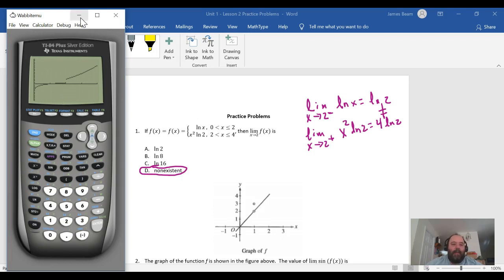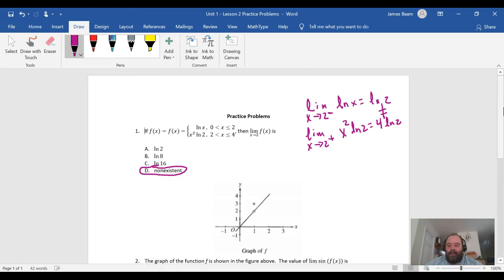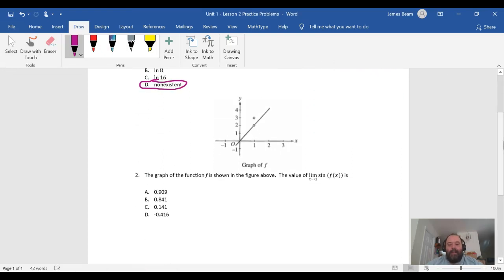Okay, all right. So this second one is also pretty instructive. It's asking here for the limit as x approaches one of the sine of f of x. The key here is that the sine is continuous.